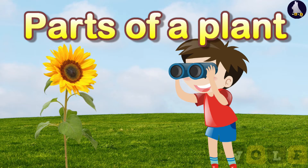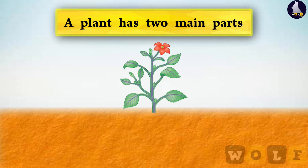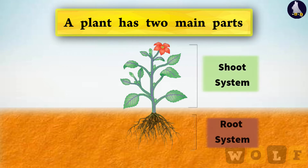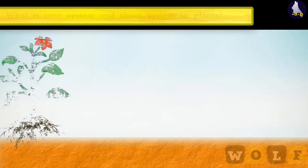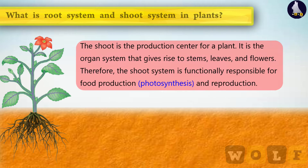A plant has two main parts: shoot system and root system. The shoot is the production center for a plant. It is the organ system that gives rise to stems, leaves, and flowers. Therefore, the shoot system is functionally responsible for food production and reproduction.